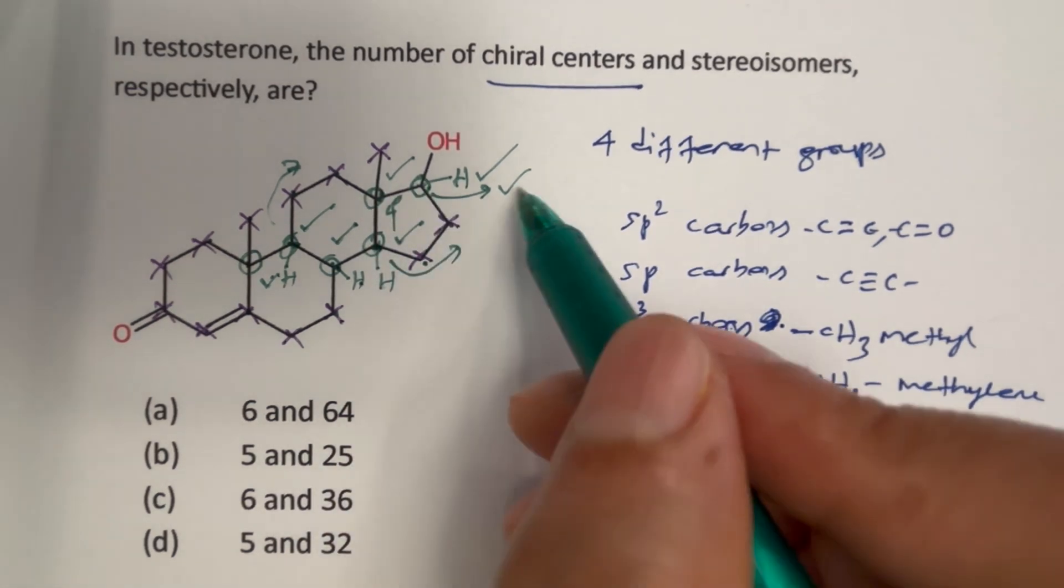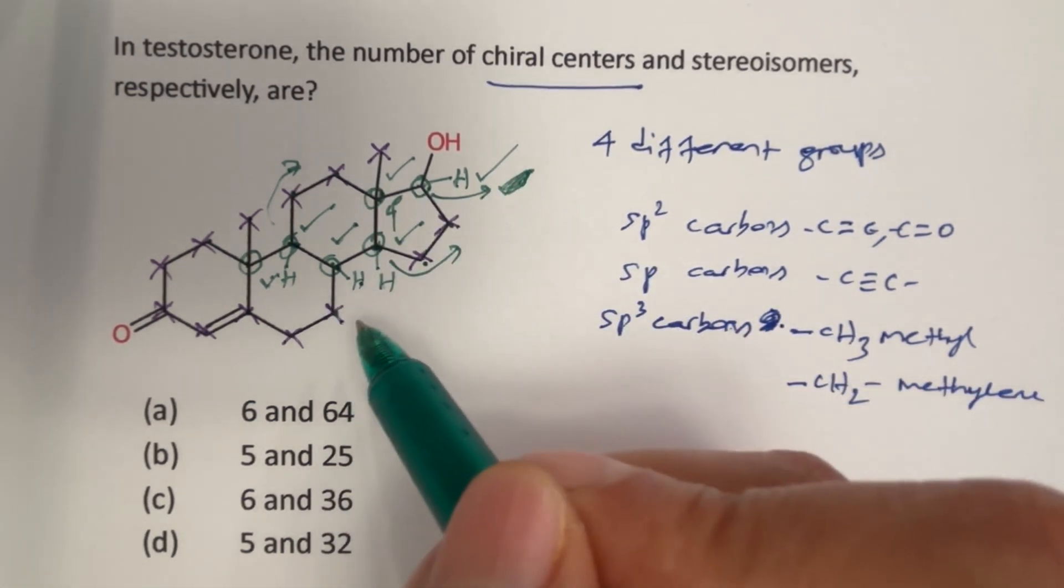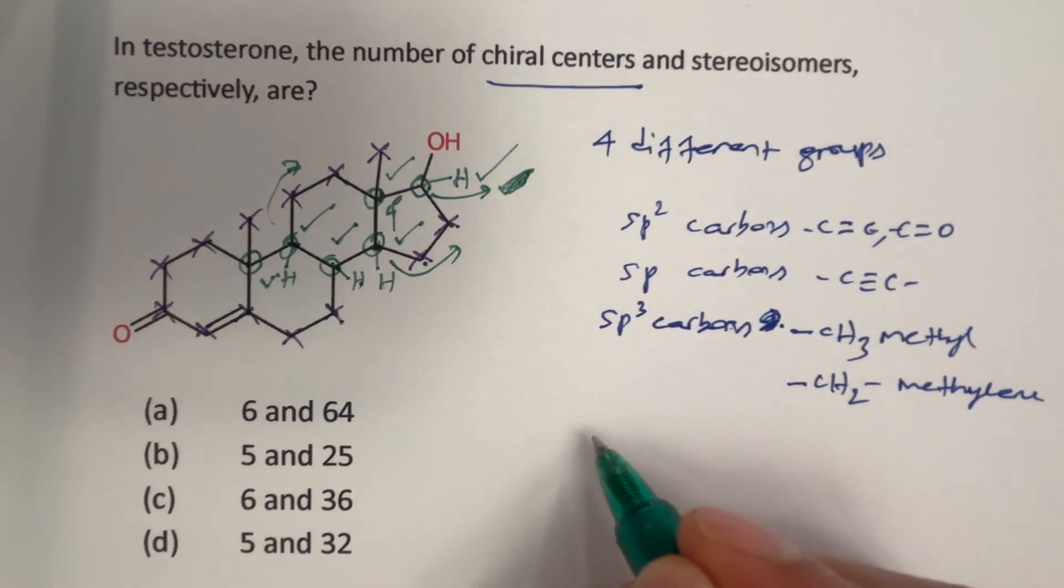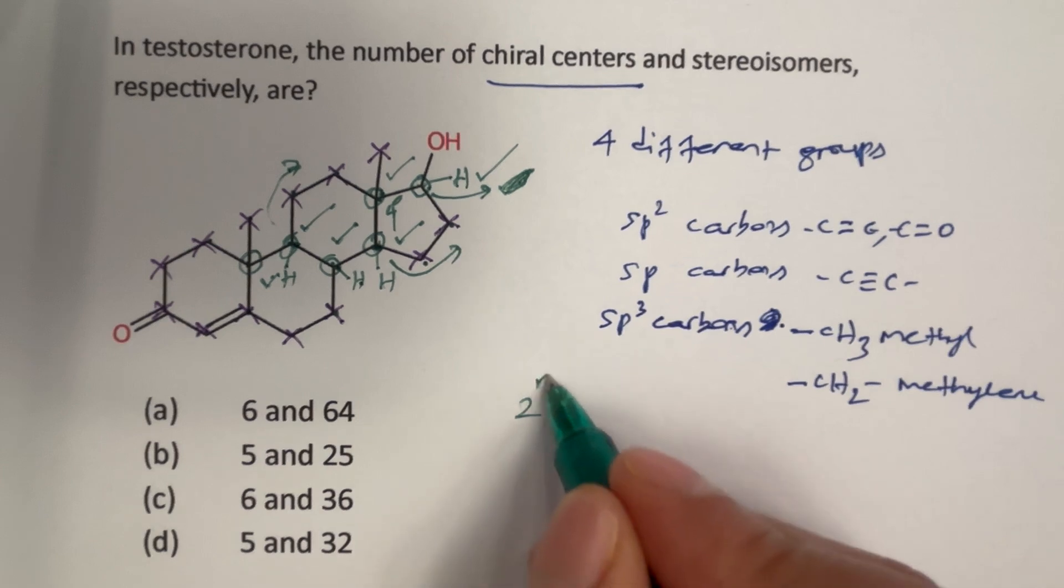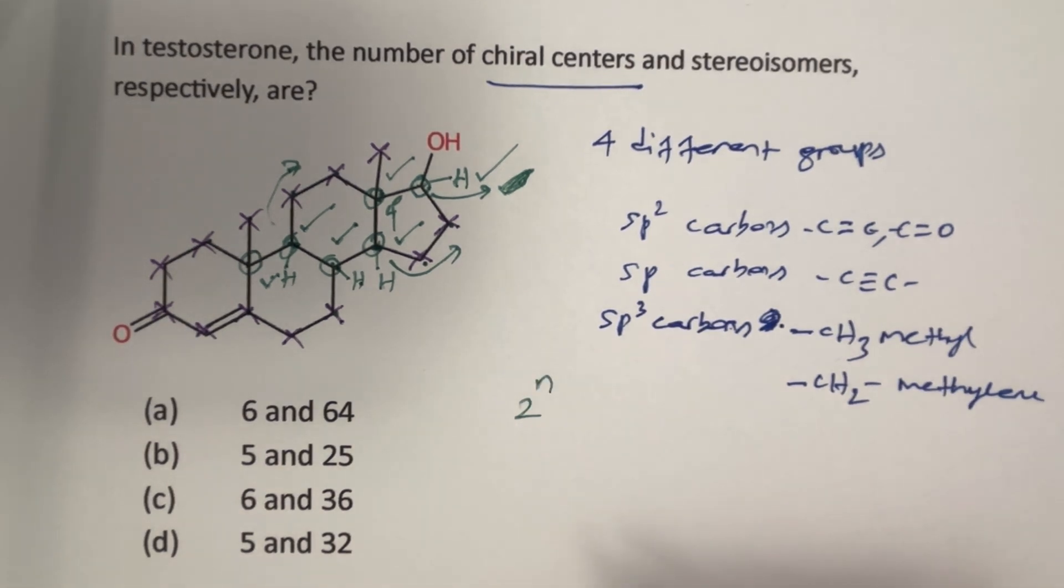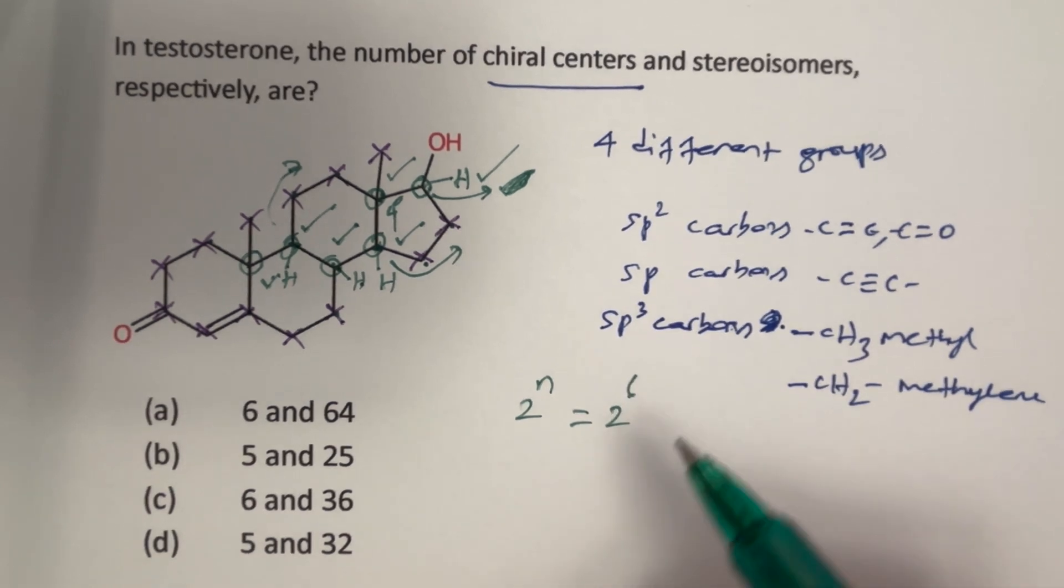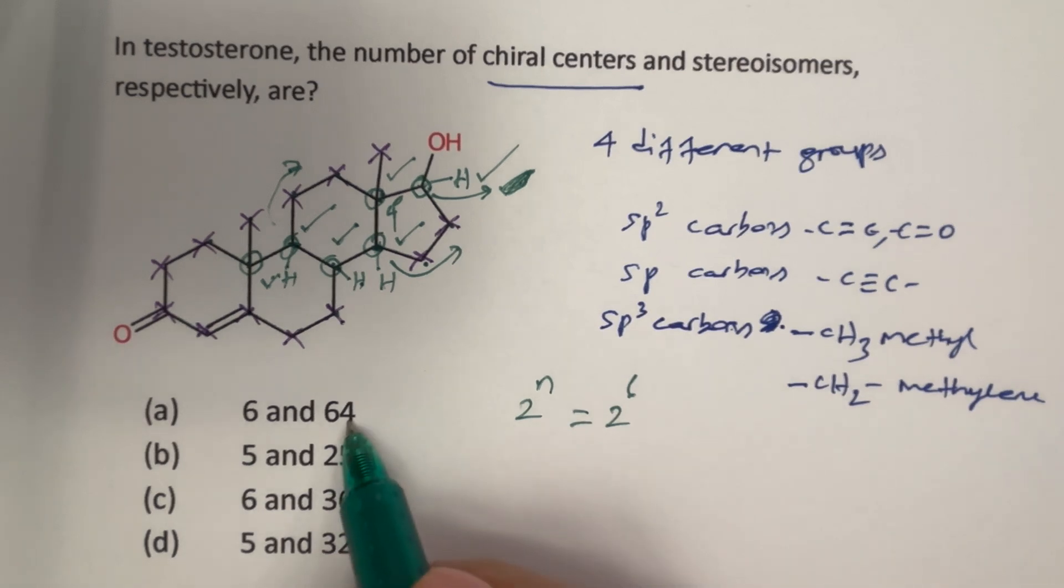And number of stereoisomers, number of stereoisomers 2 to the power n, where n is the number of stereocenters. Here chiral centers and stereocenters are one and the same. So this is equal to 2 to the power 6, 2 to the power 6 is 64, therefore option A is the correct choice here.